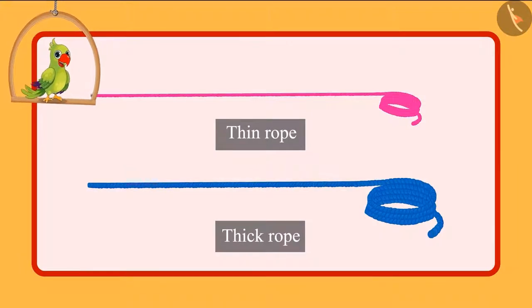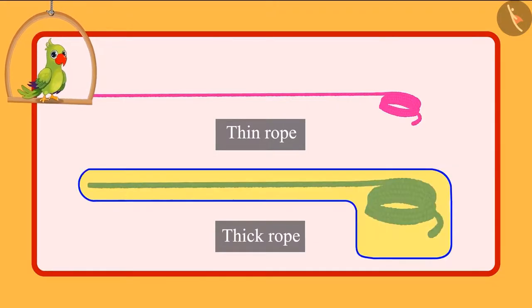So children, you saw Chotu and Pinky chose the thick rope instead of the thin rope to hang a swing.